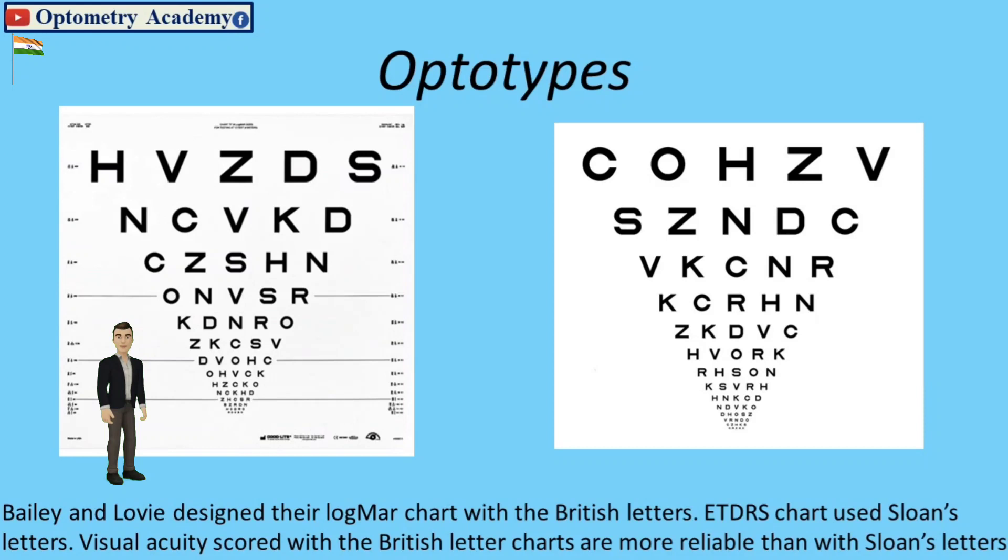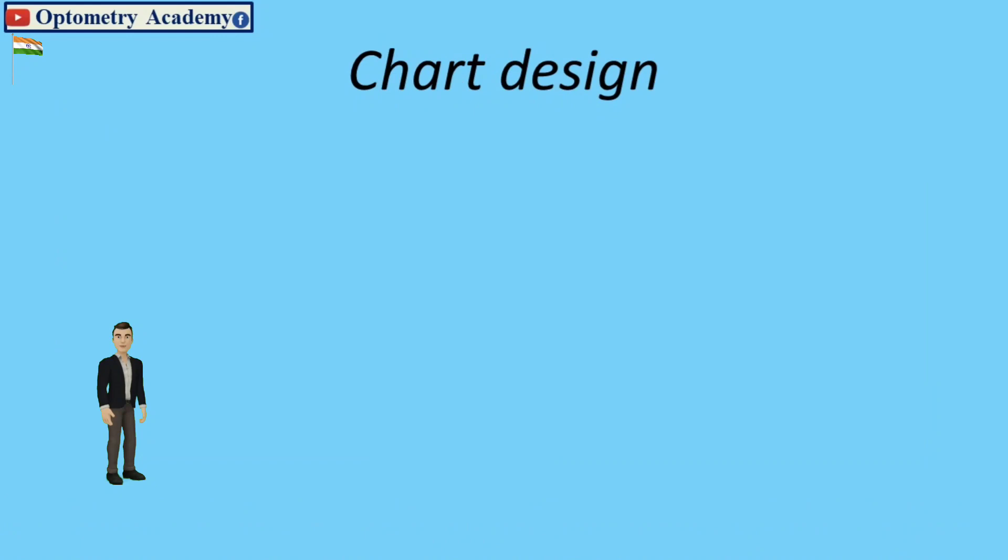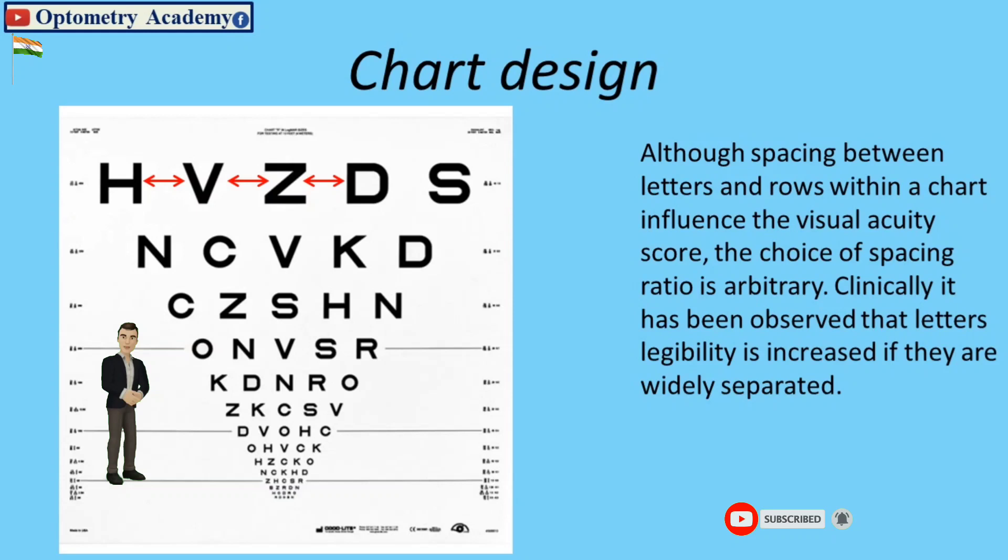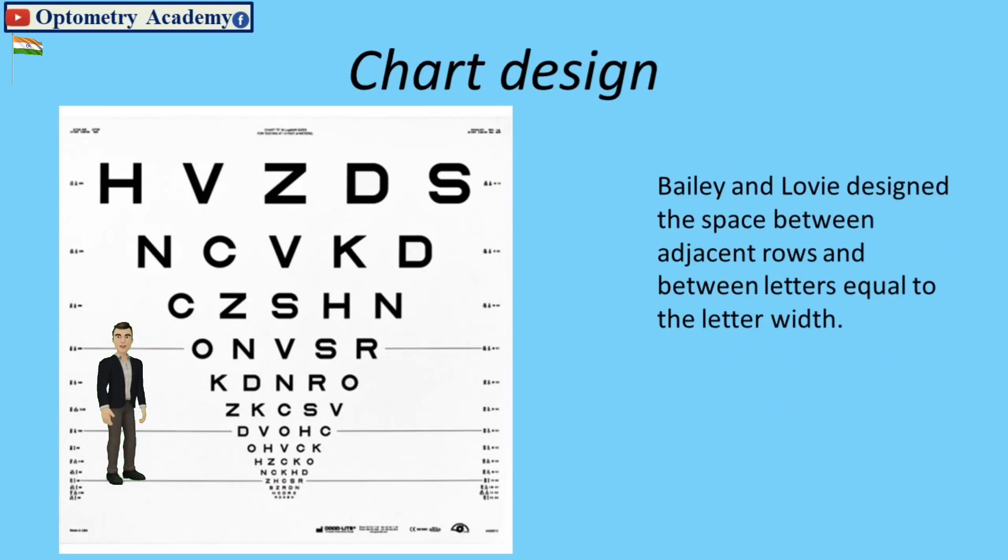Visual acuity scores with the British letter charts are more reliable than with Sloan's letter charts. Chart design: Although spacing between letters and rows within a chart influences the visual acuity score, the choice of spacing ratio is arbitrary. Clinically, it has been observed that letters' legibility is increased if they are widely separated. Balian Lobby designed the space between adjacent rows and between letters equal to the letter width.